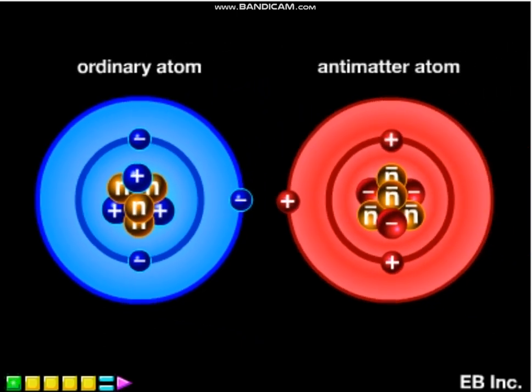Antimatter is a substance composed of atomic particles that have the same masses as the electrons, protons, and neutrons found in ordinary matter. However, each of the particles is of the opposite charge as its normal material counterpart.